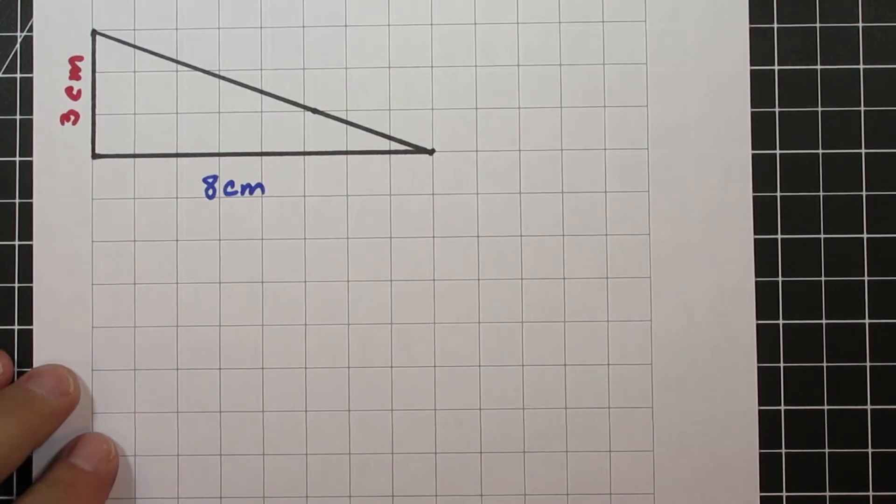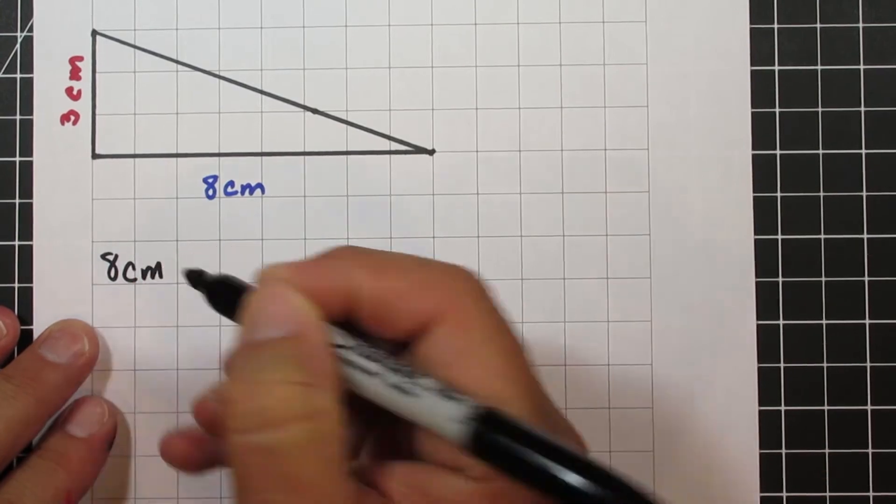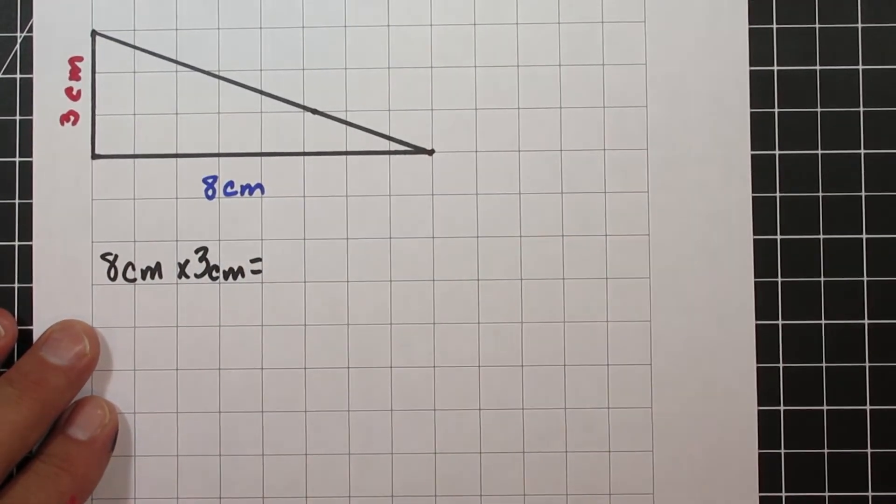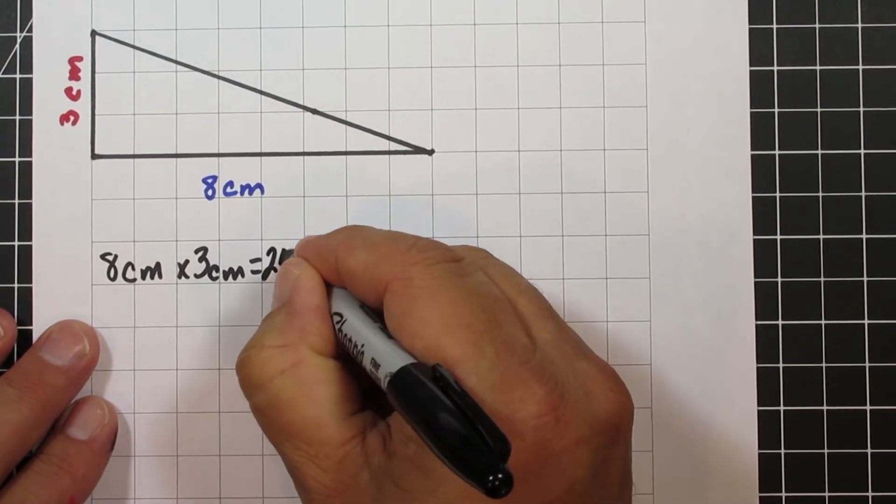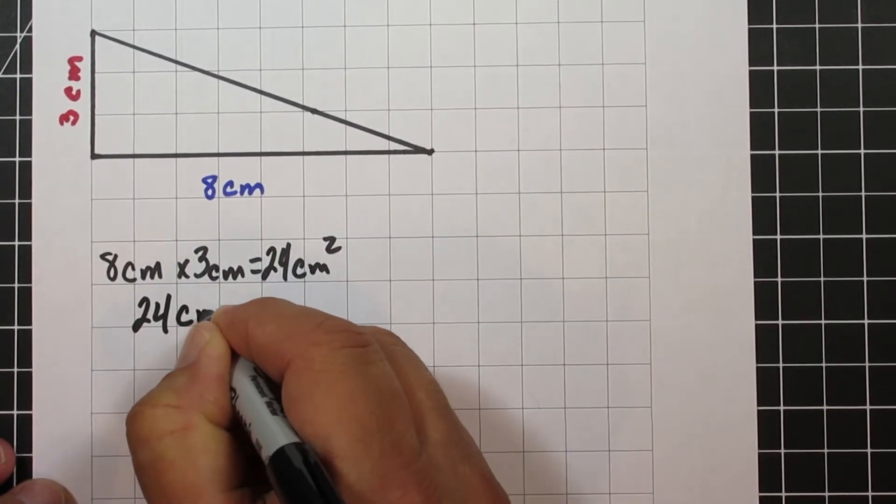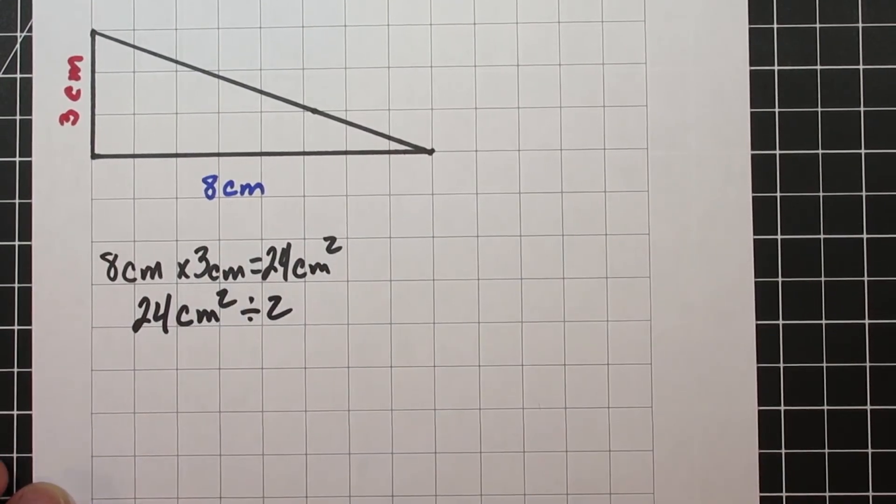This is a right triangle, the base is 8, height is 3. So just like before, we're going to take 8 times 3, so base times height, it's going to give us 24 centimeters squared. We'll take that 24 centimeters squared, divide it in half, and that will give us 12 centimeters squared.